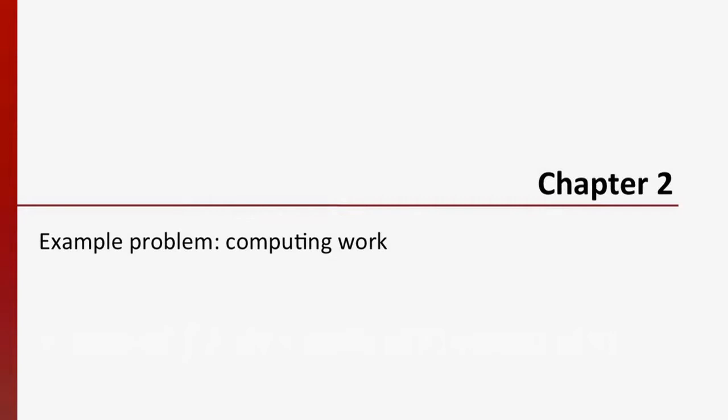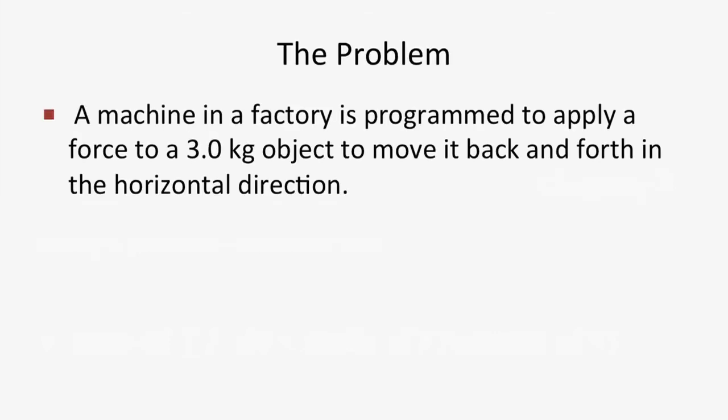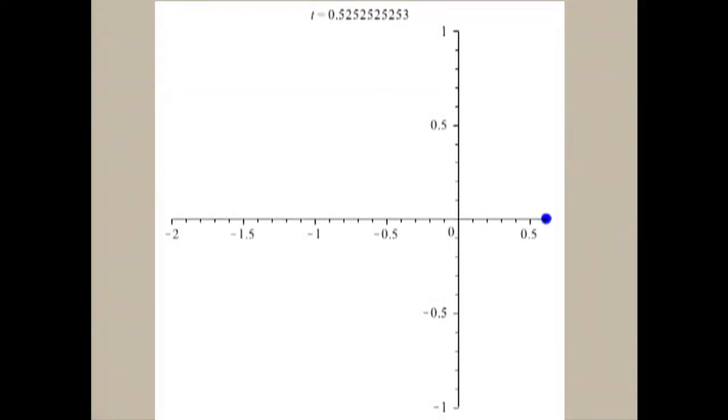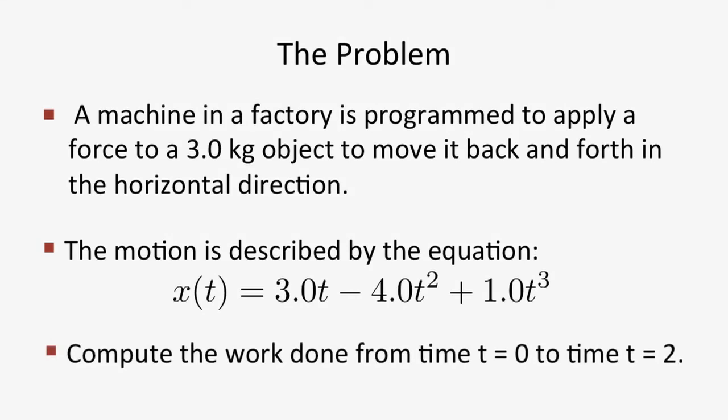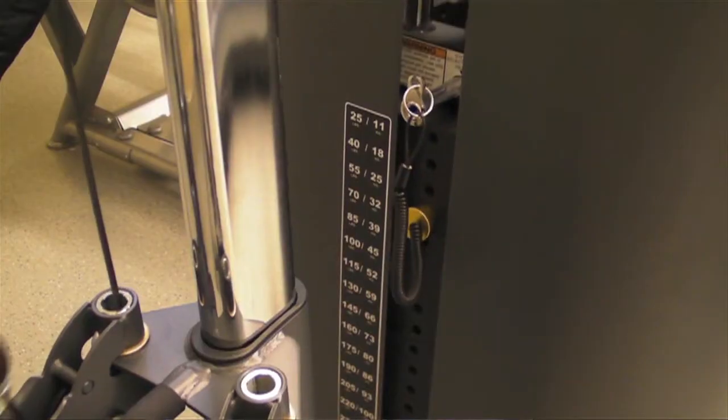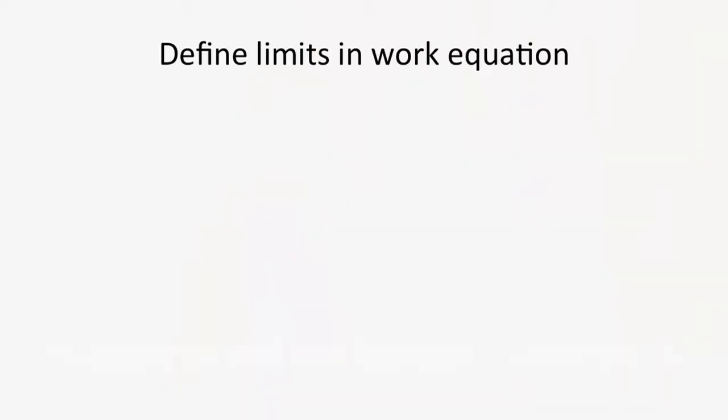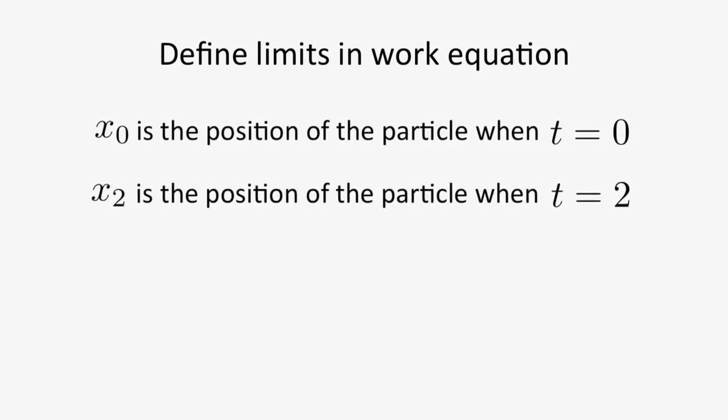In this example, we'll see how unit analysis can help us check our calculation of the work done by an applied force. In this problem, a machine in a factory is programmed to apply a force to a 3 kilogram object to move it back and forth in the horizontal direction. The position of the object as a function of time is given by the equation x equals 3t minus 4t squared plus 1t cubed, where x is measured in units of meters and t in seconds. Find the work done on the object by the force from t equals 0 to t equals 2. Note that work is done when a force is applied over a distance on an object.